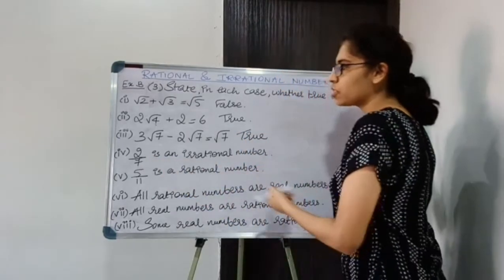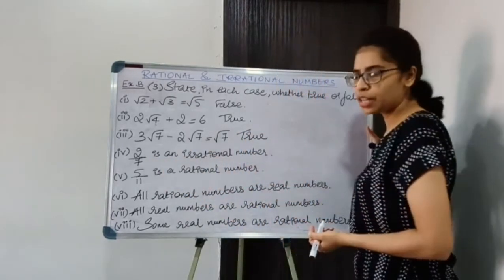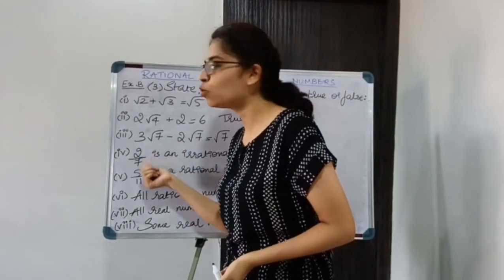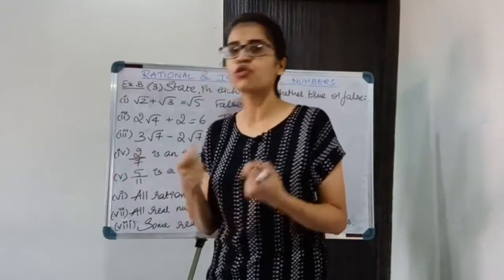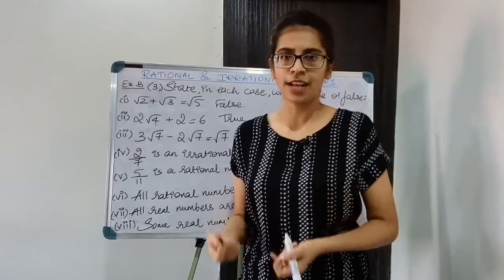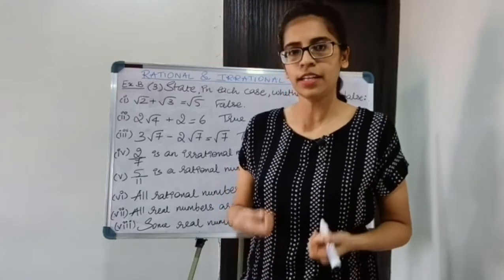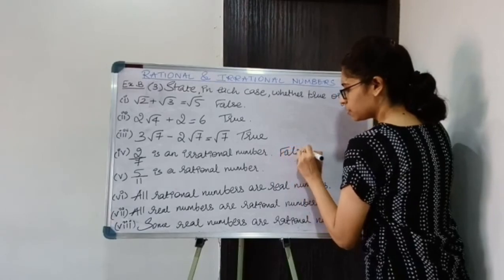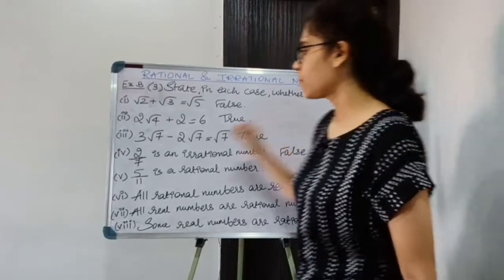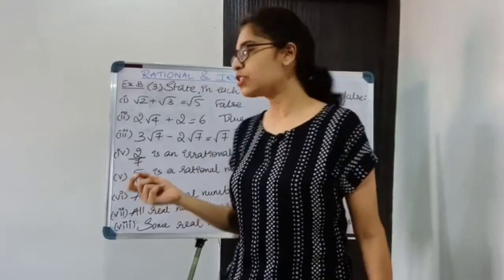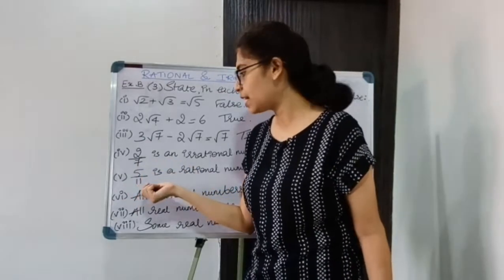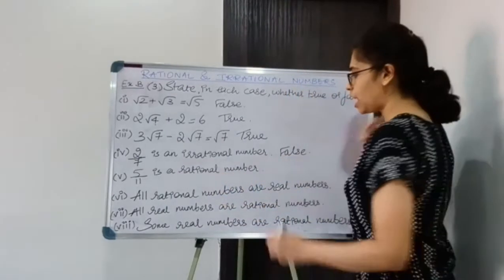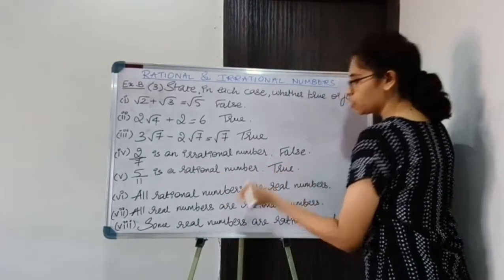Moving on to the fourth statement: 2/7 is an irrational number. Now 2/7 is of the form P/Q where both are integers and the denominator is not equal to 0, so it is a rational number, not irrational. The statement is false. Fifth: 5/11 is of the form P/Q where both are integers and Q ≠ 0, so it is a rational number. The statement is true.